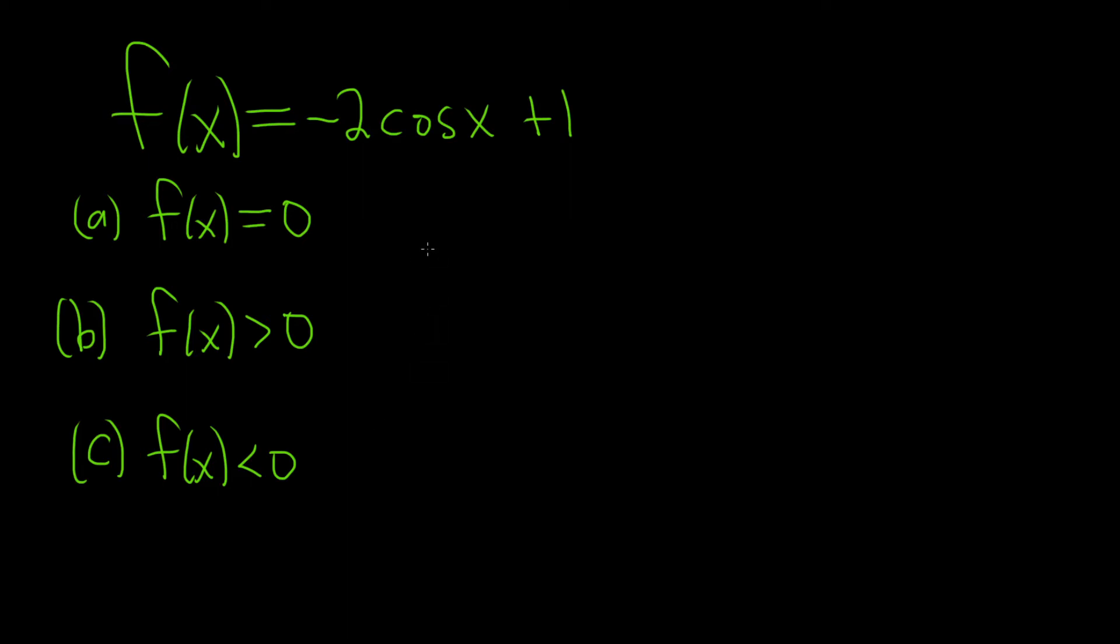In this problem, we have a function, negative 2 times the cosine of x plus 1, and we're being asked to solve this equation and these inequalities. We're also told that our interval is 0 to 2π.